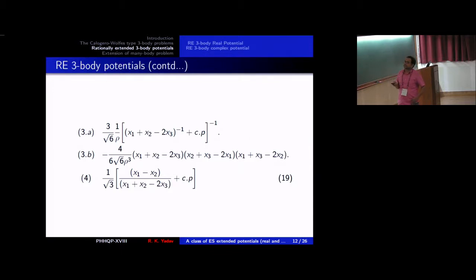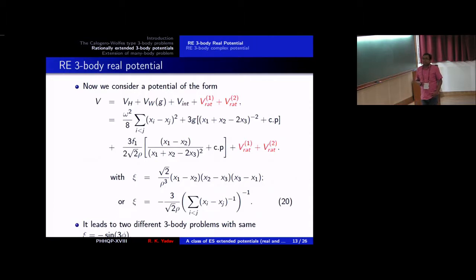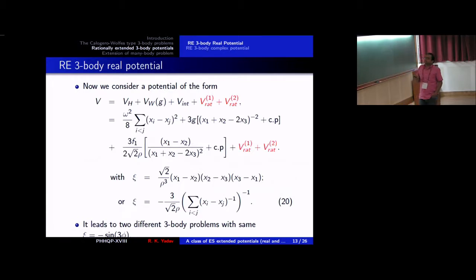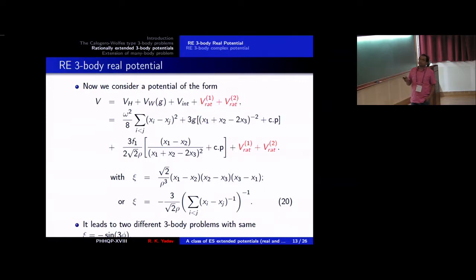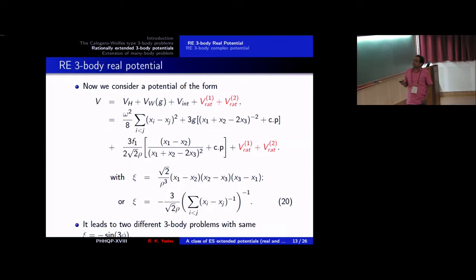We consider one example for the real case and another for the complex case. For the real case, we include the harmonic term of the Calogero model, the Wolfsberg term, the Khare-Bhaduri interaction term, and our new term. The Khare term is included with cp indicating cyclic permutation, along with V_rational_1, which is already defined, and V_rational_2, which we now define.